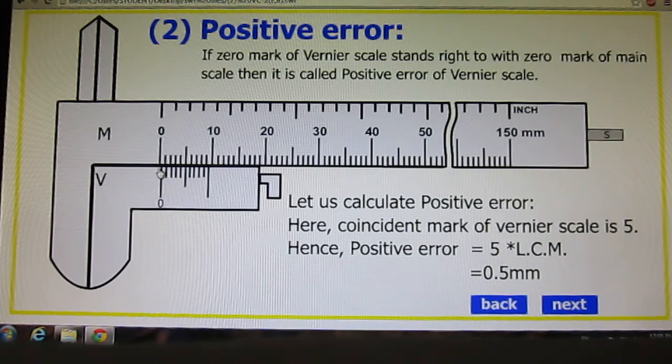So there will be zero error. Let us calculate the positive error. The coincident mark of Vernier scale is five. How and where? Yes, it is here.